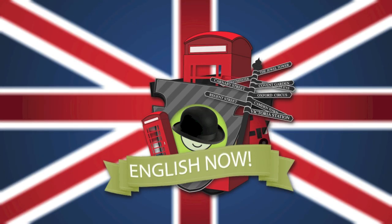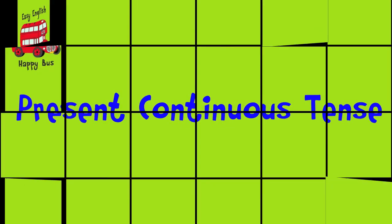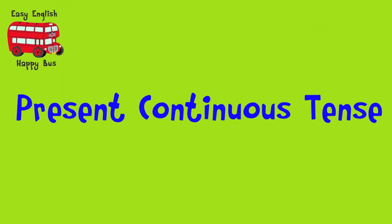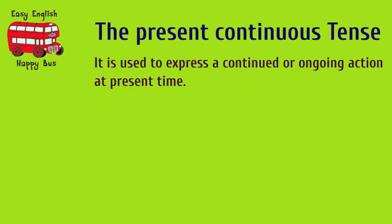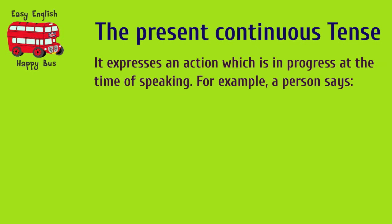Easy English. The Present Continuous Tense. It is used to express a continued or ongoing action at present time. It expresses an action which is in progress at the time of speaking.